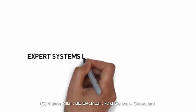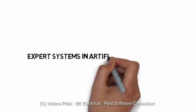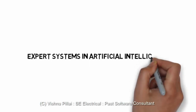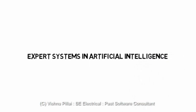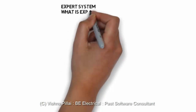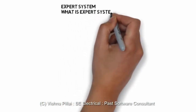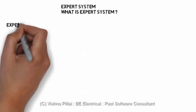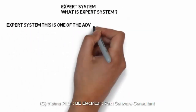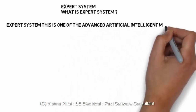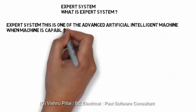This video is about Expert Systems in Artificially Intelligent Systems. We have seen that Intelligent Systems and Learning Systems are there, but when an Artificially Intelligent System is designed to be an expert in a specific domain of knowledge, such systems are known as Expert Systems.